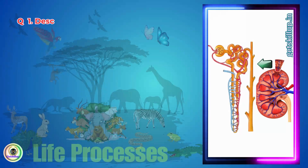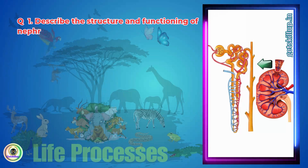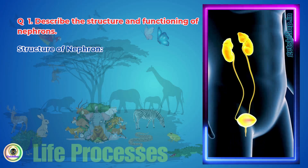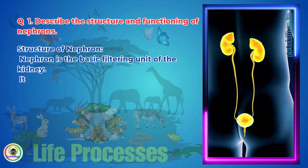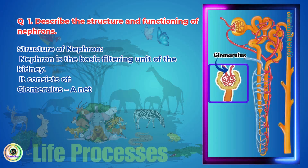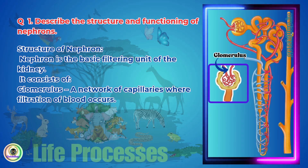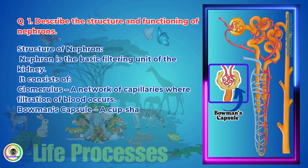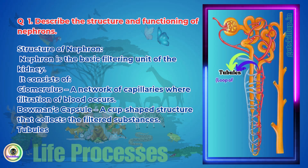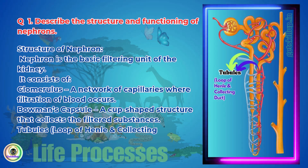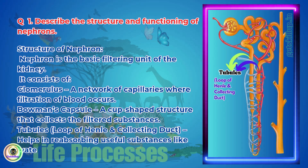Question 1: Describe the structure and functioning of nephrons. The nephron is the basic filtering unit of the kidney. It consists of the glomerulus, a network of capillaries where filtration of blood occurs, and Bowman's capsule, a cup-shaped structure that collects the filtered substances. Tubules, the loop of Henle, and the collecting duct help in reabsorbing useful substances like water and glucose.